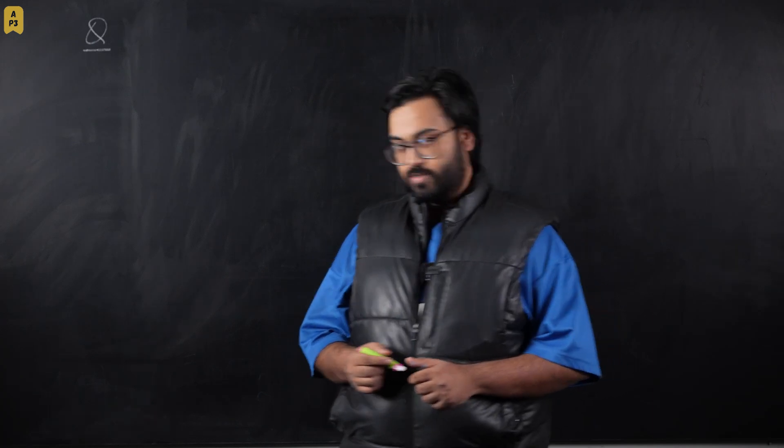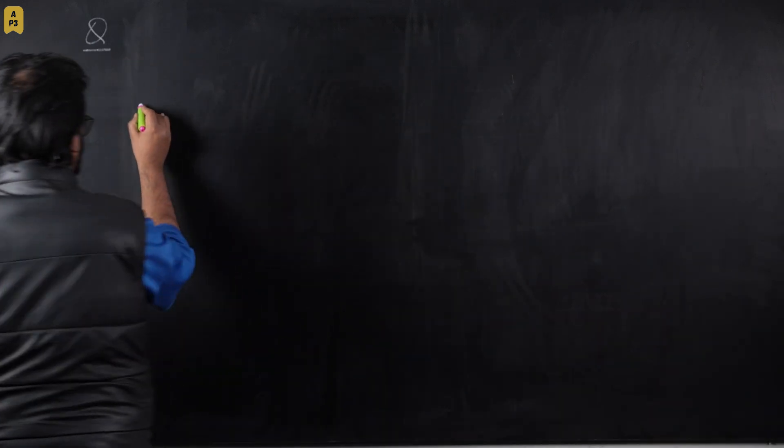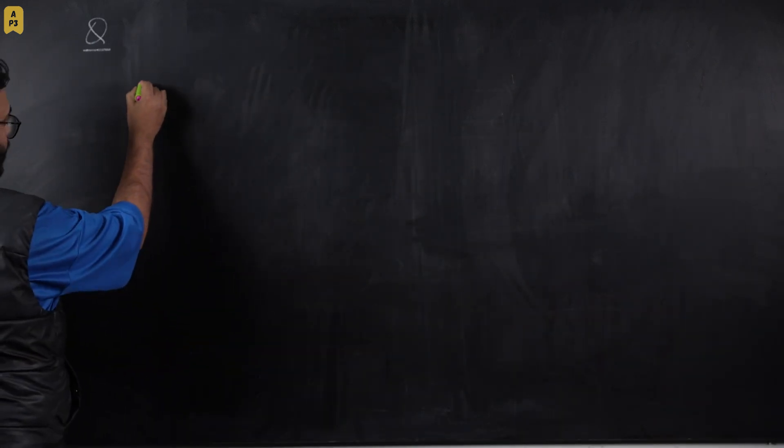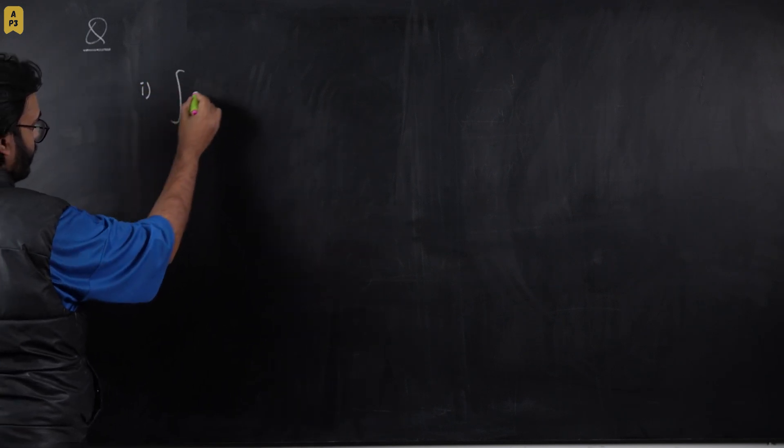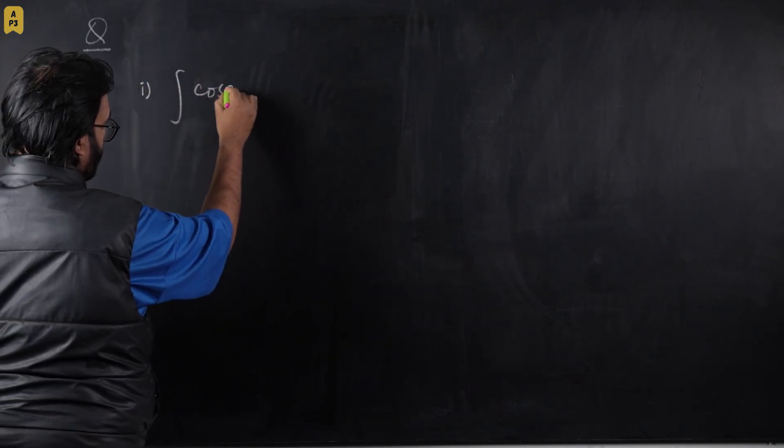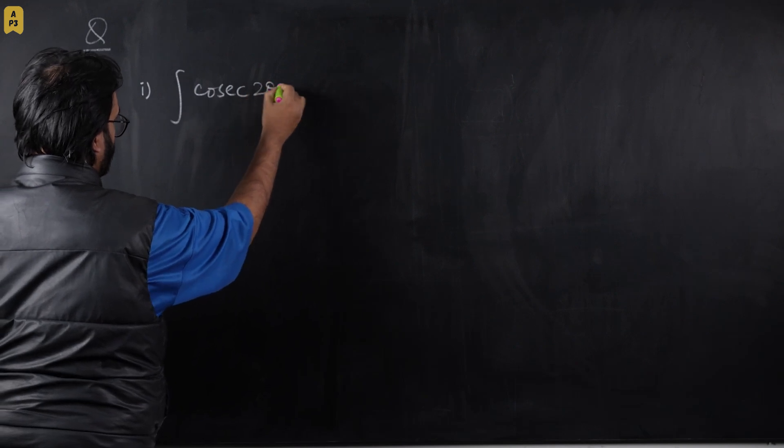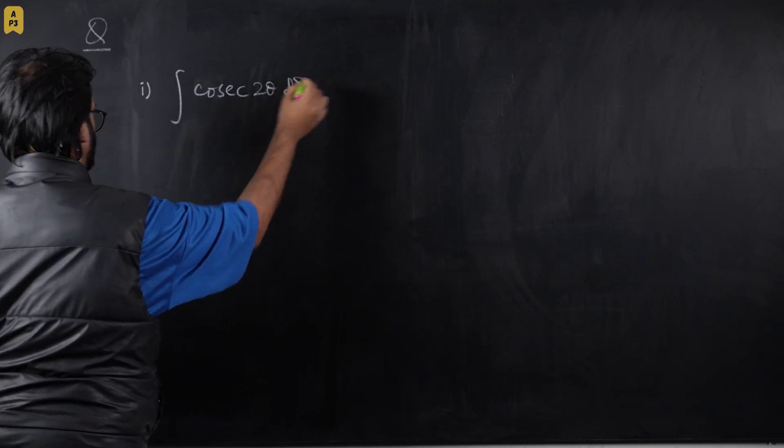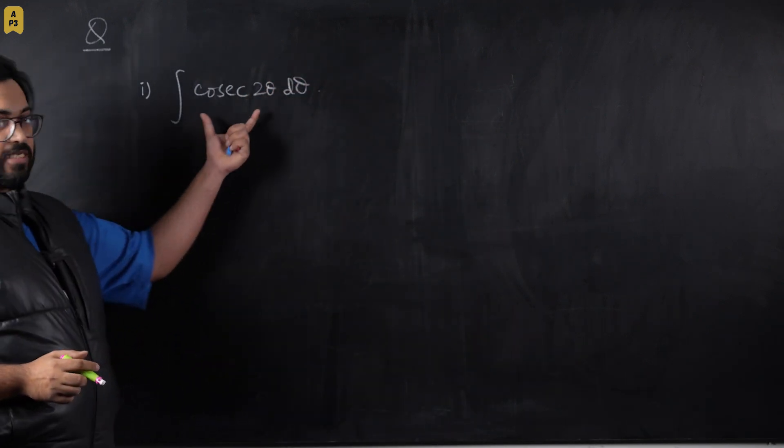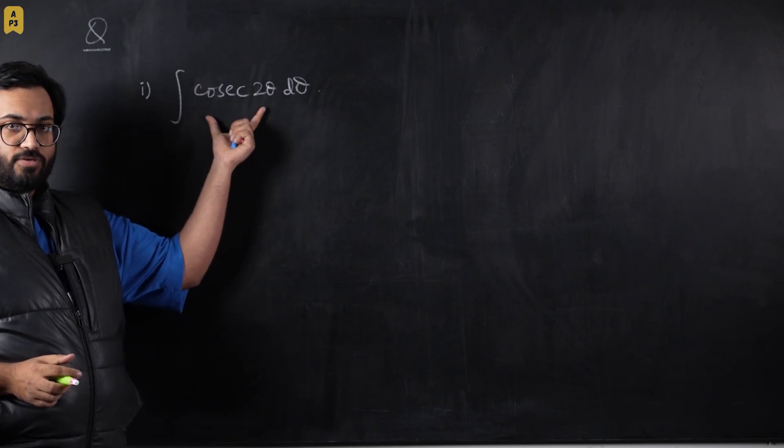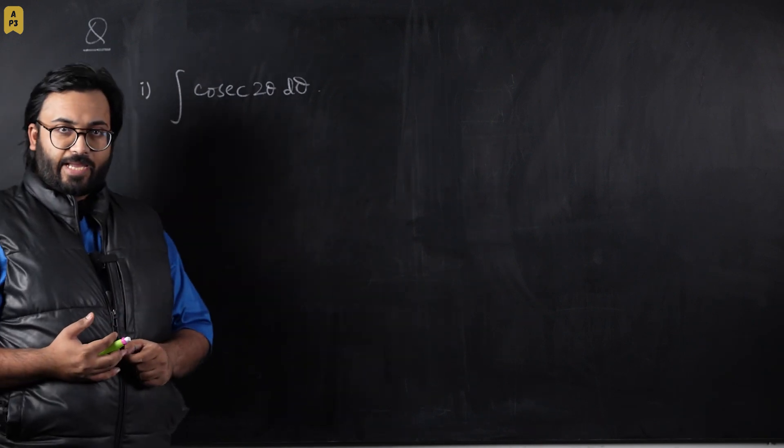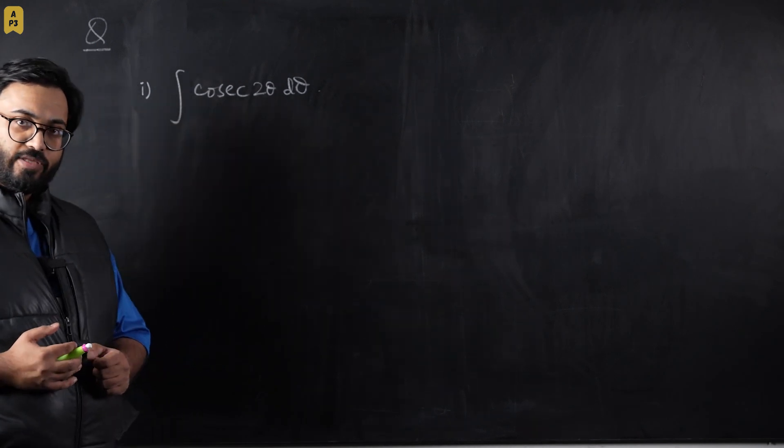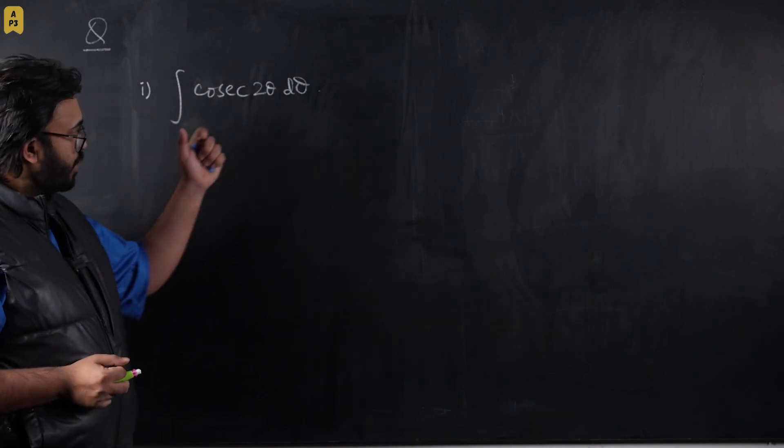So let's start. The question that I want you guys to solve is basically integral of cosecant 2θ dθ. This is the integral that I want you guys to solve. You guys can pause the video, try to think for a while, and then come back for the solution.